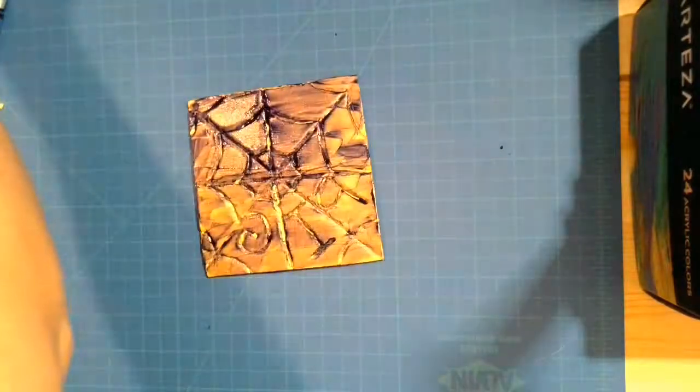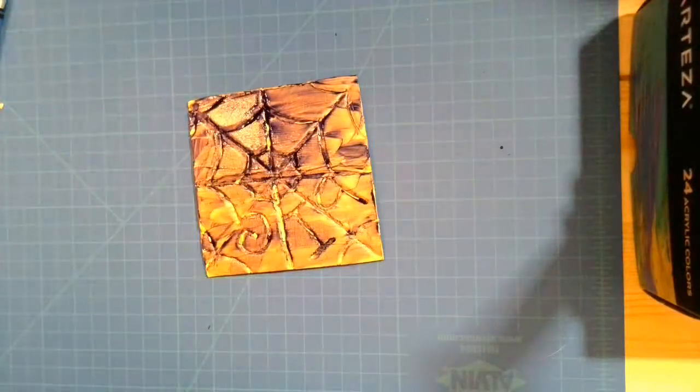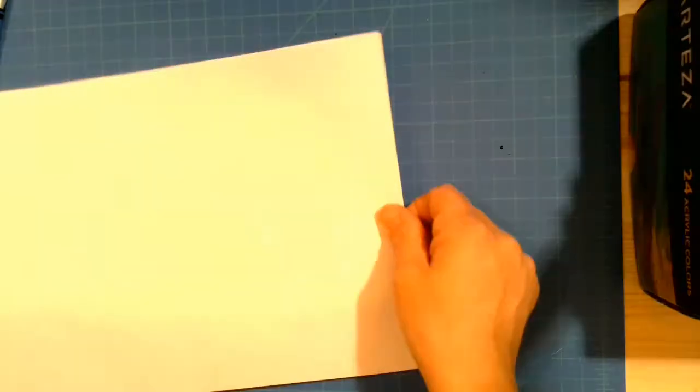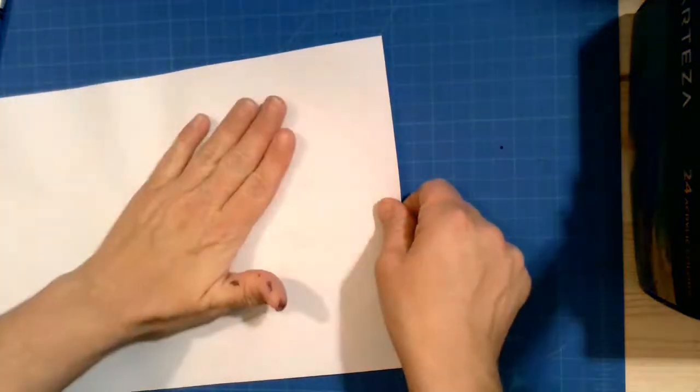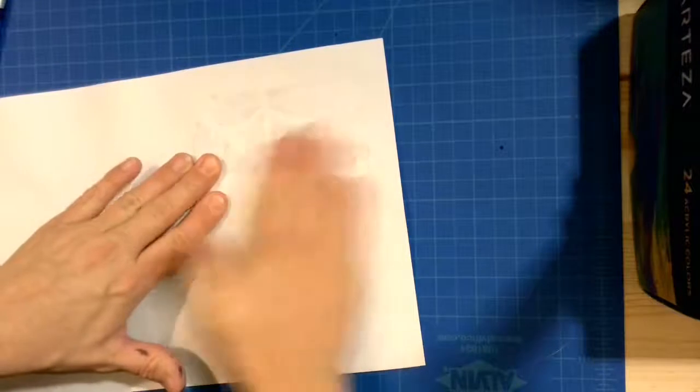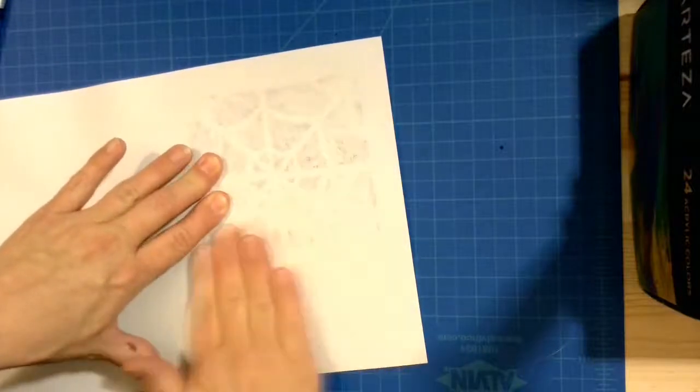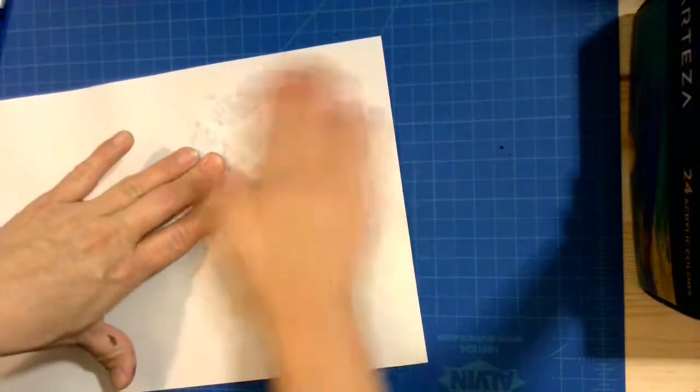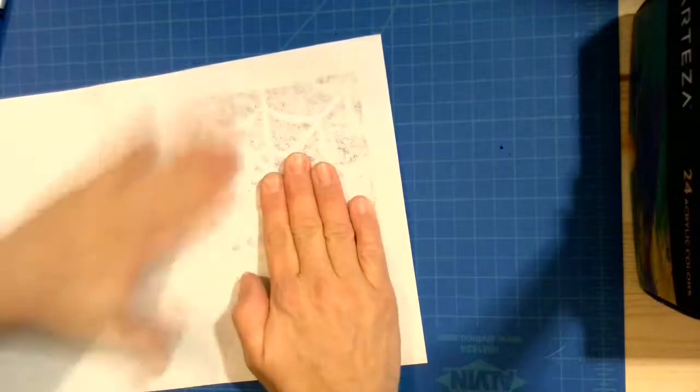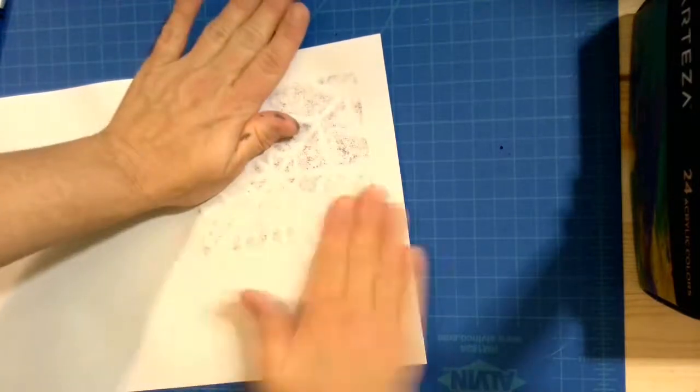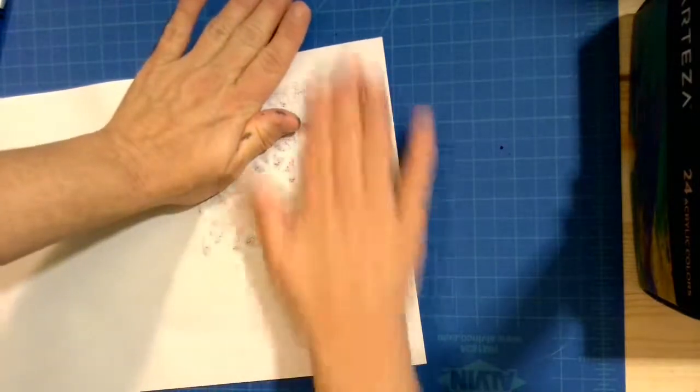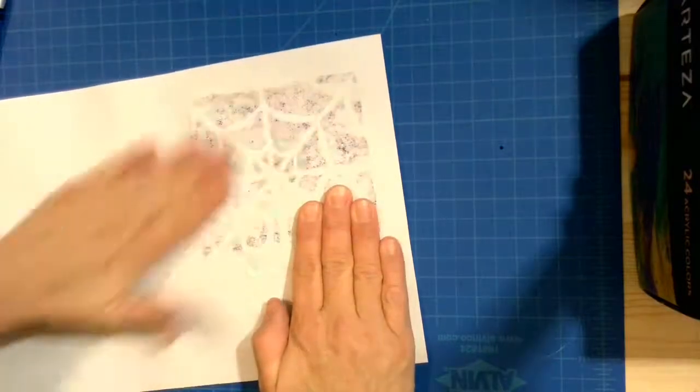All right once you get it completely covered your next step is to use a piece of paper applied right on the top. So I'm going to do that now, I'm going to set mine right on top and then I'm going to use my hands to make sure that I rub and transfer all of that paint from my styrofoam template onto my paper. So I want to make sure I rub and get it on each corner and in the middle.